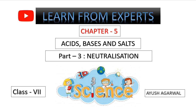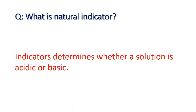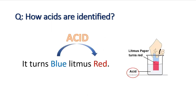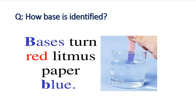Before coming to our topic, let us check what you have learned from the previous videos. What are natural indicators? The answer is: indicators determine whether a solution is acidic or basic. Moving to the next question — how are acids identified through litmus paper? Acid turns blue litmus paper red. And how is a base identified? Just opposite to acids — base turns red litmus paper blue.